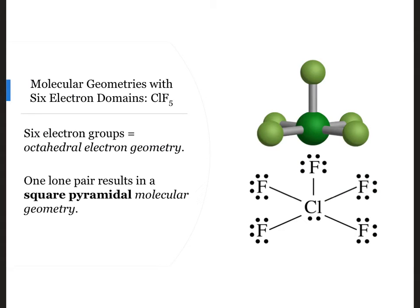In the chlorine pentafluoride molecule, we have six electron domains around the chlorine atom to give an octahedral electronic geometry, but one is a lone pair of electrons. All the positions in an octahedron are equivalent, so we can put the lone pair of electrons in any position. If we replace the bonding pair on the bottom position with the lone pair of electrons, we see how the molecular geometry gets its name: square pyramidal.